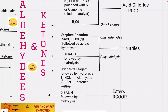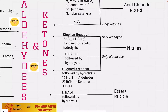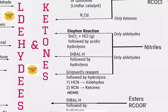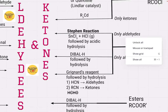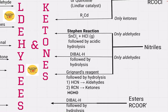Nitriles can be converted to aldehydes and ketones by three different ways. You can reduce it by treating with SnCl₂ and HCl followed by acidic hydrolysis, but by this method we can only prepare aldehydes. Similarly, you can also reduce it with DIBAL — diisobutylaluminium hydride — but again we can only prepare aldehydes by this method.